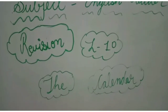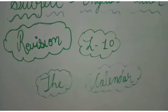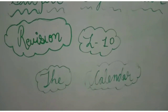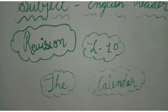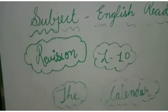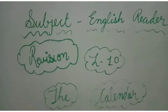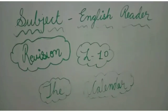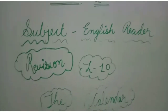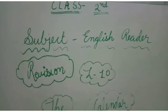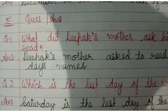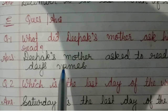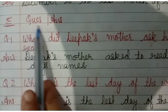This chapter is about the calendar, which has dates and days. There are 12 months listed. Exercises A, B, C, D and word meanings were done in the previous video. Today we revise Exercise E — question and answer.